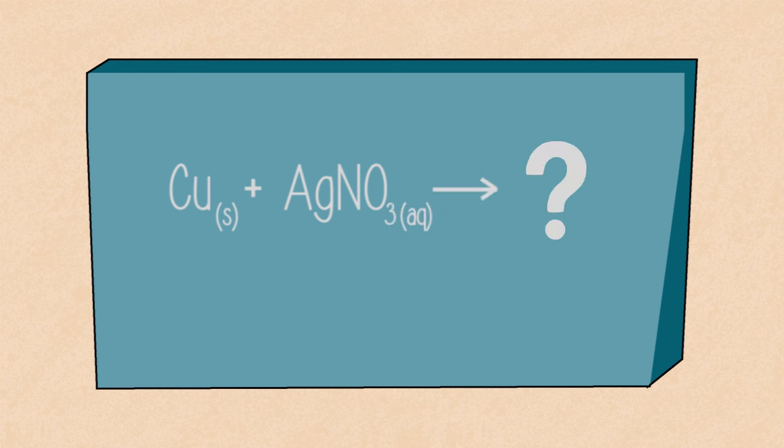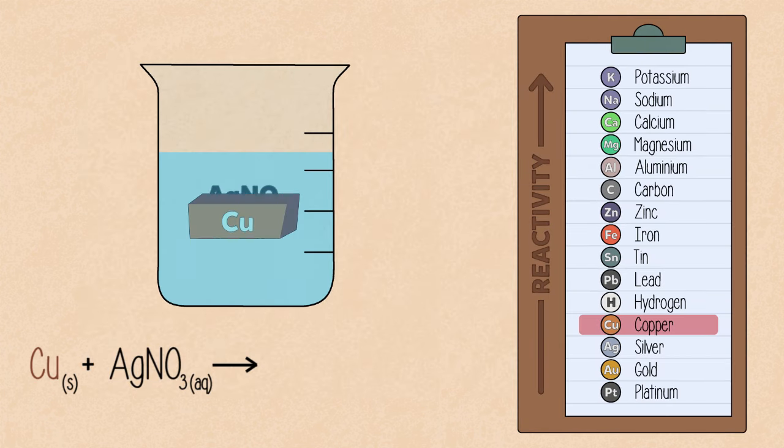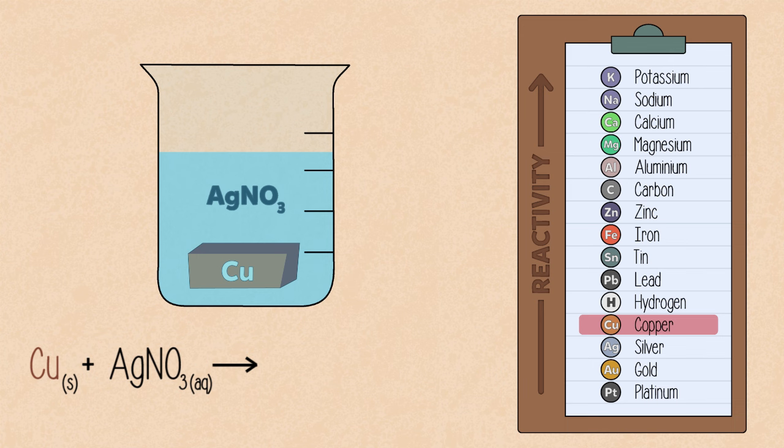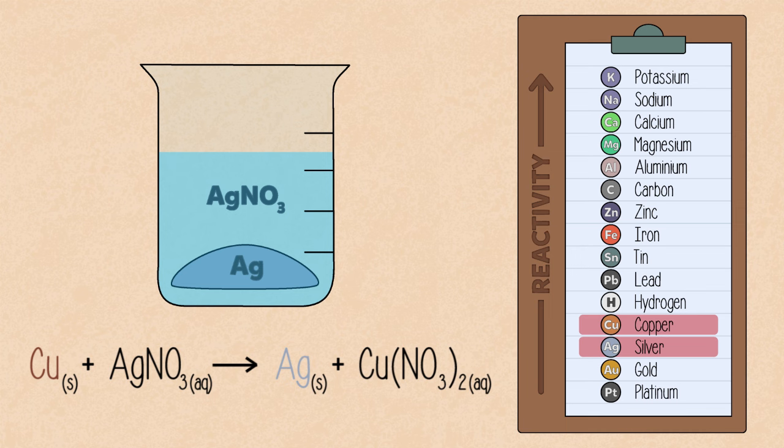Can you predict the products from this single displacement reaction? Pause the lesson and continue when ready. As copper is more reactive than silver, it can displace silver in silver nitrate, producing silver metal and aqueous copper nitrate.